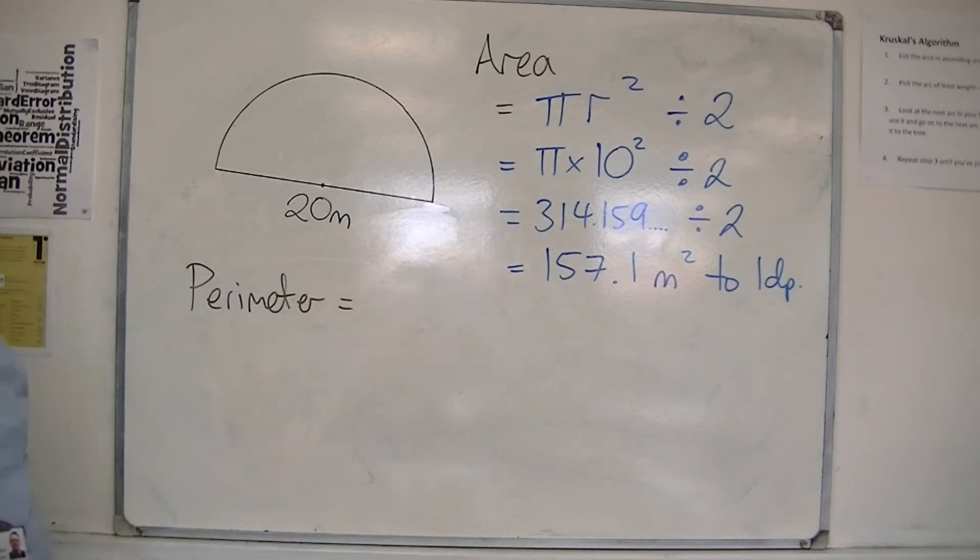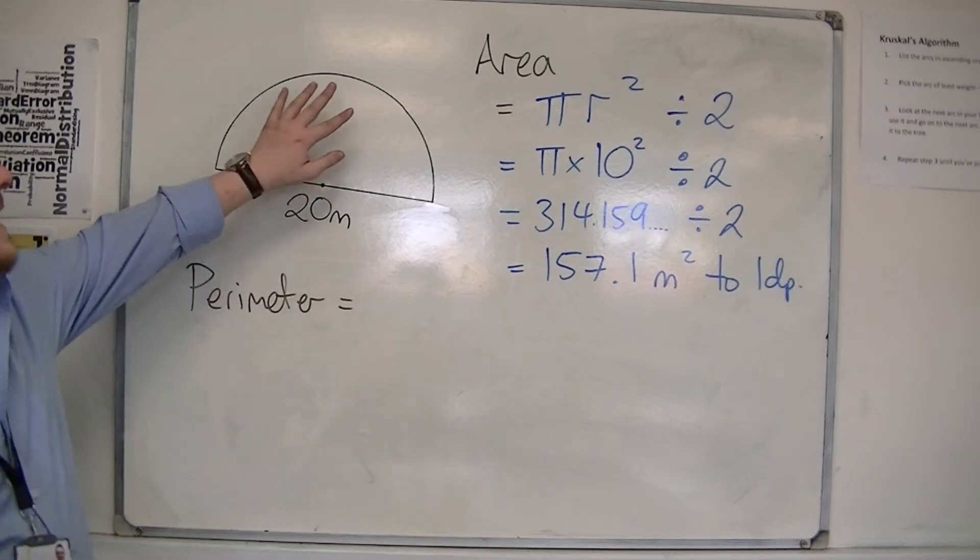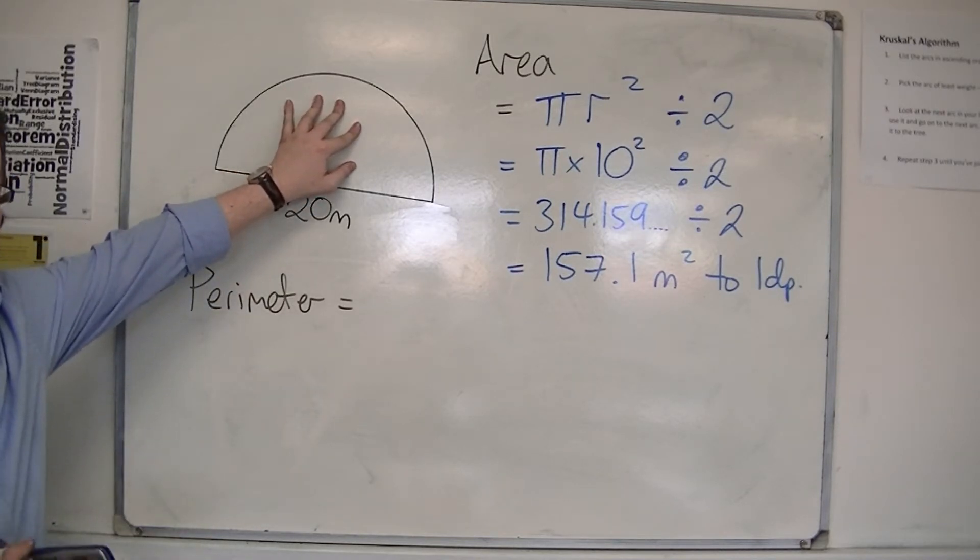So you should get 157.1 metres squared to one decimal place, and that is the area of the semicircle.